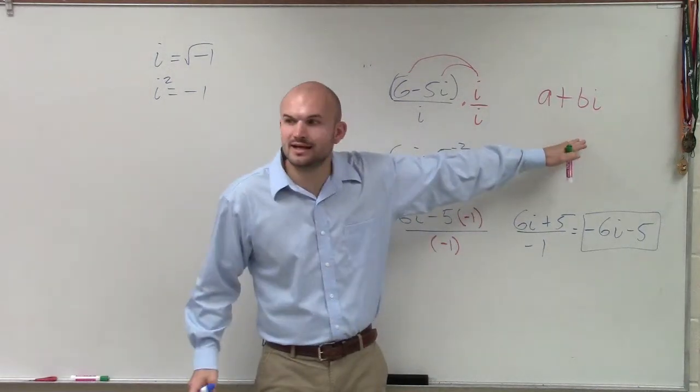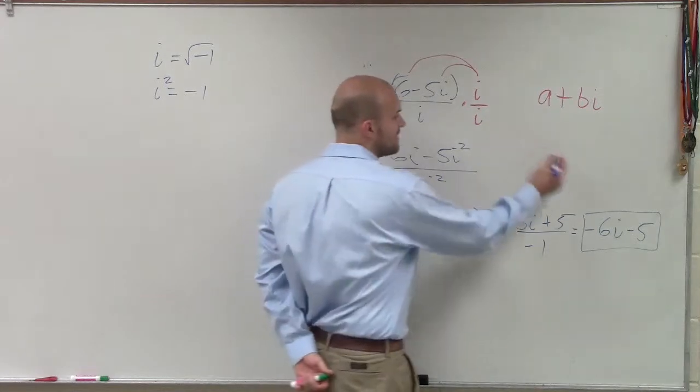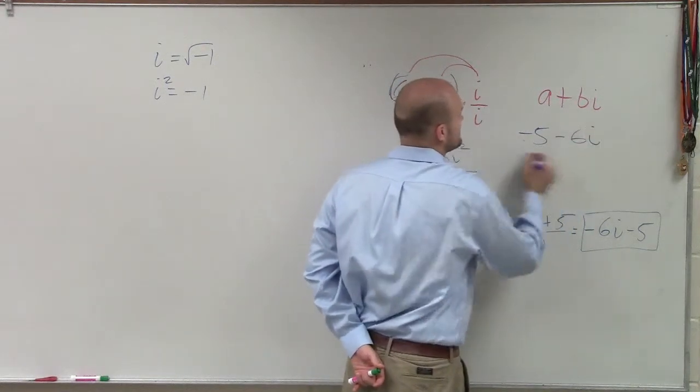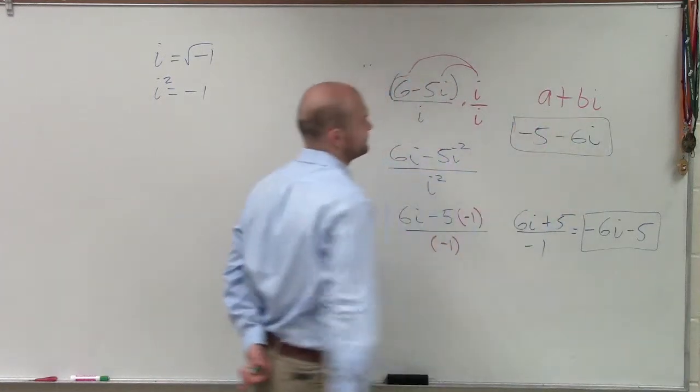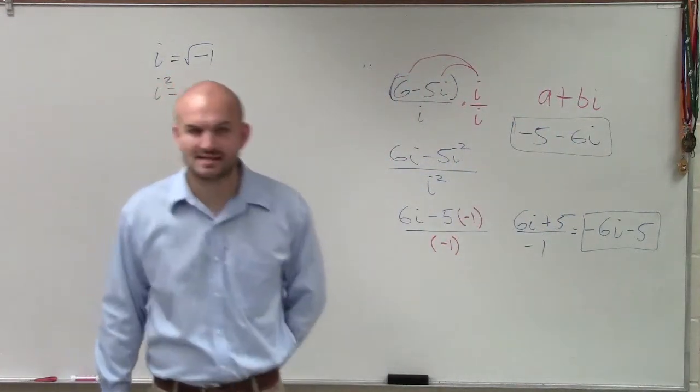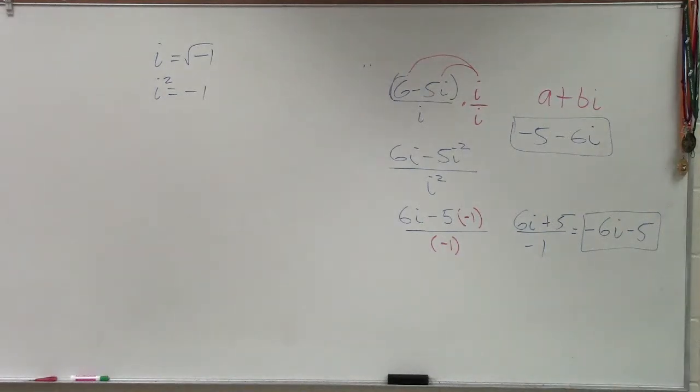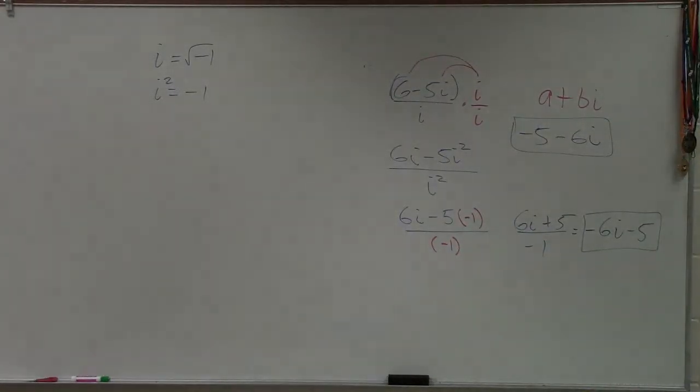You have to write it in this format, so therefore, my final answer should be negative 5 minus 6i. That's how you should have got the answer for that problem. Make sense?